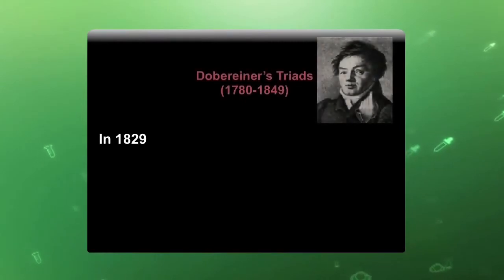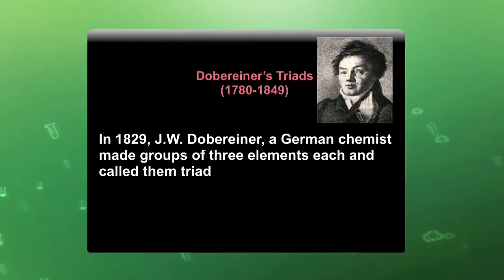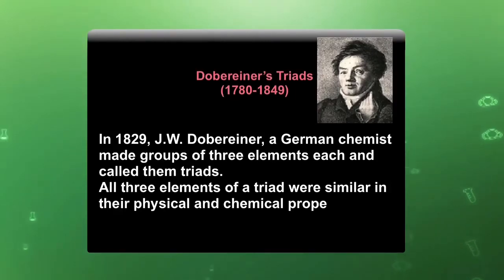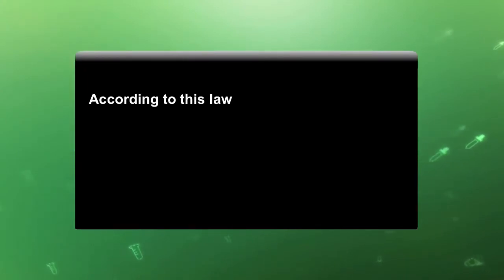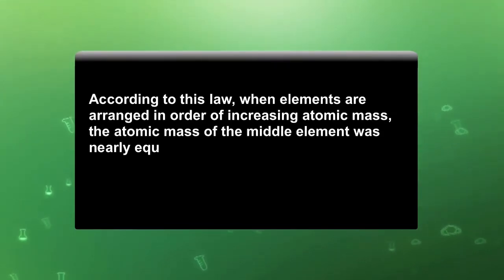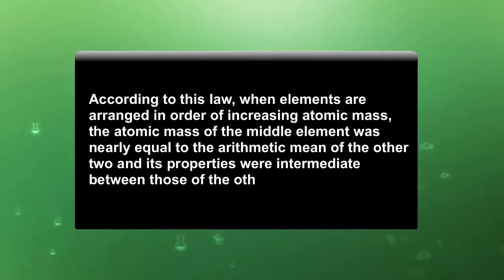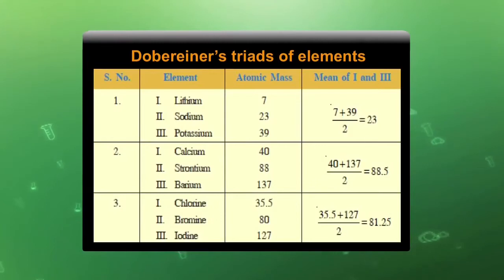Dobereiner's Triads: In 1829, J.W. Dobereiner, a German chemist, made groups of three elements and called them triads. All three elements in a triad were similar in their physical and chemical properties. He proposed a law known as Dobereiner's Law of Triads. According to this law, when elements are arranged in order of increasing atomic masses, the atomic mass of the middle element was nearly equal to the arithmetic mean of the other two, and its properties were intermediate between those of the other two elements. This table shows the different triads formed by Dobereiner, indicating that the atomic mass of the middle element is the arithmetic mean of the other two.